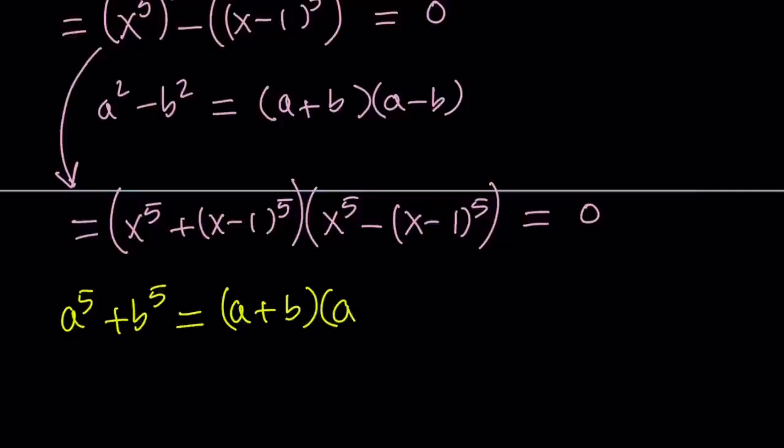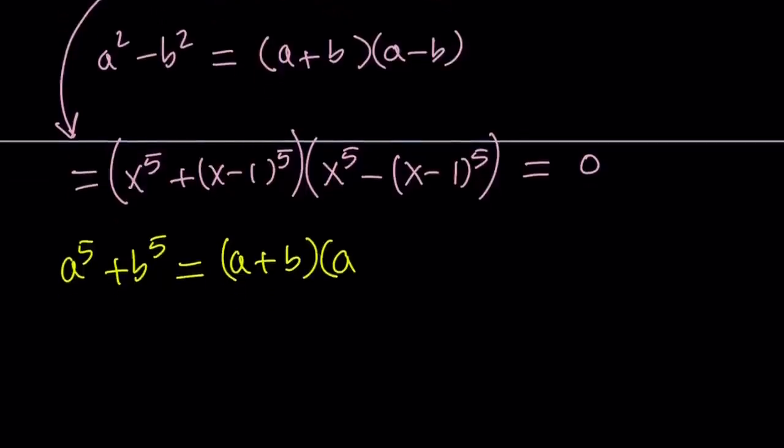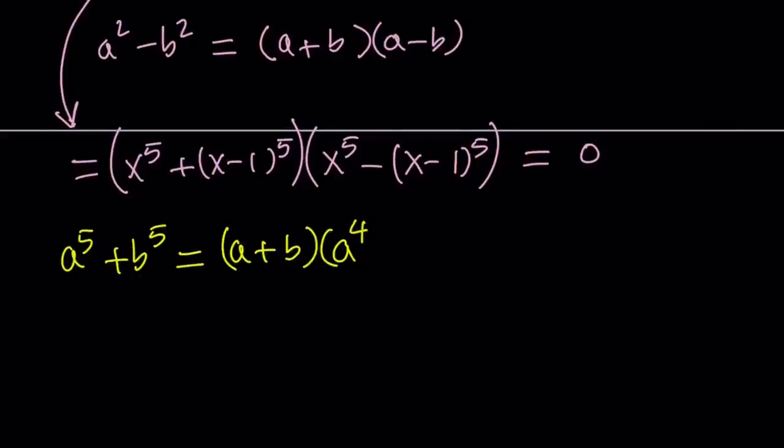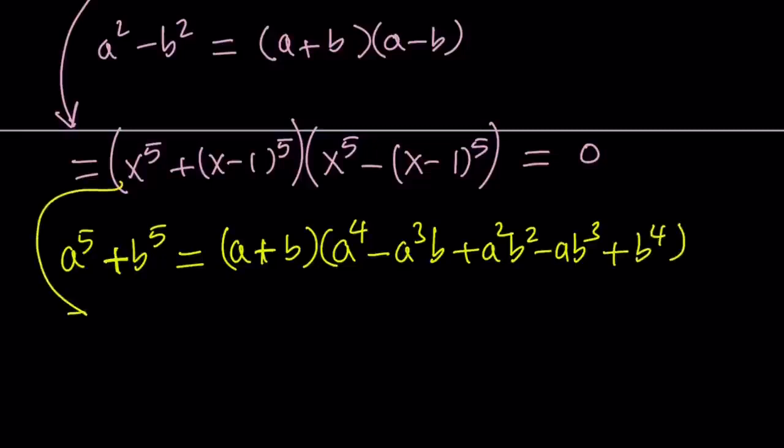The second factor is found by reducing the power of a while increasing the power of b, kind of like the binomial theorem without the binomial coefficients. So the first term is a to the fourth, and then we have to alternate because we have a plus sign. So then we have minus a cubed b plus a squared b squared minus a b cubed plus b to the fourth power. And difference of two fifth powers is pretty much the same thing, you just change the sign.